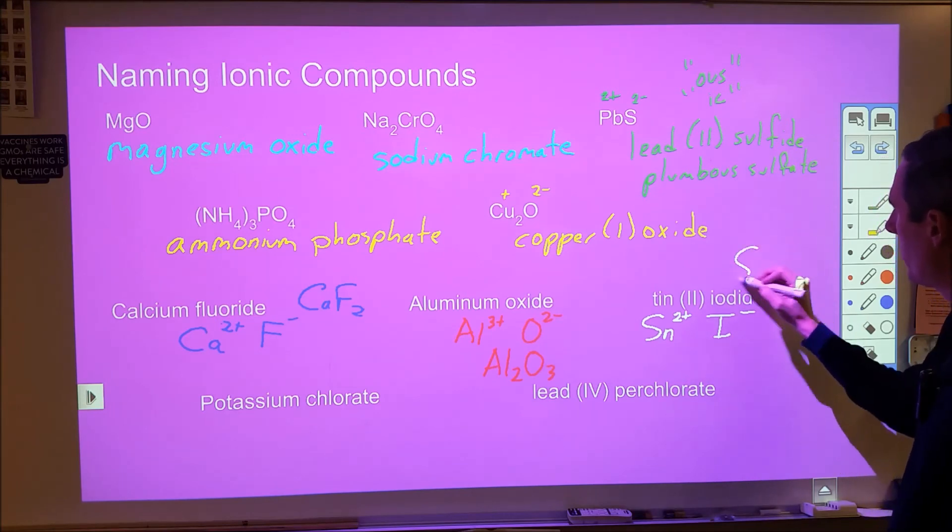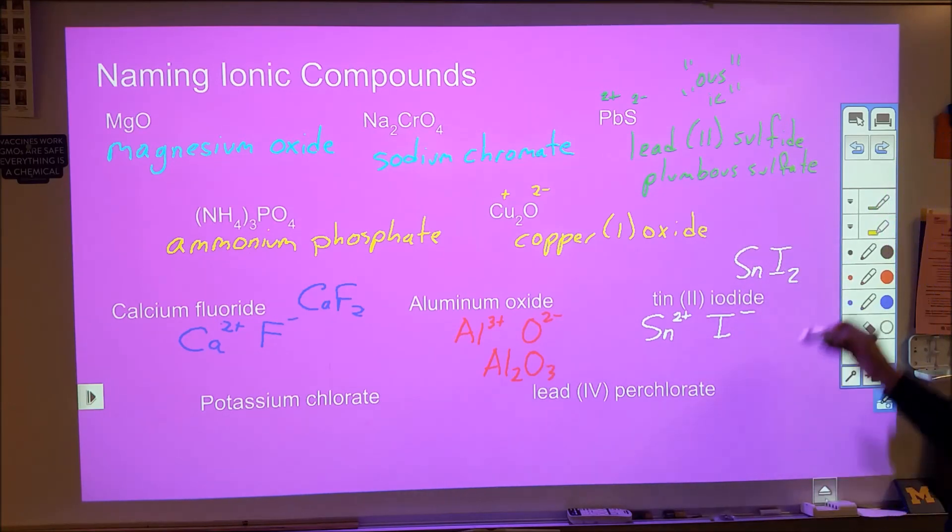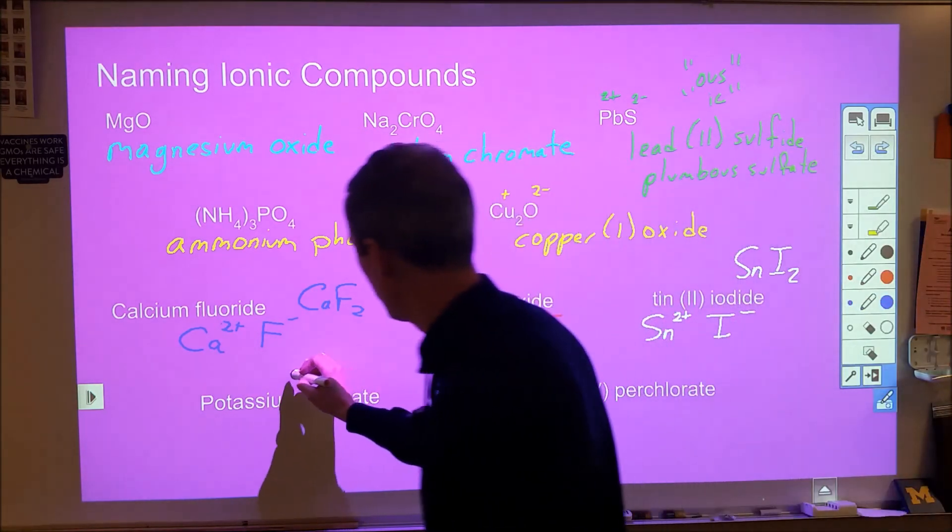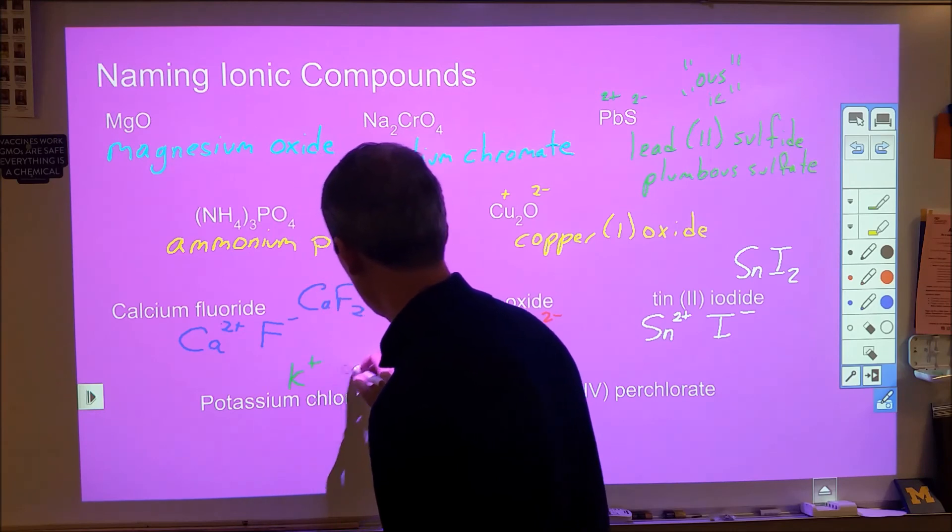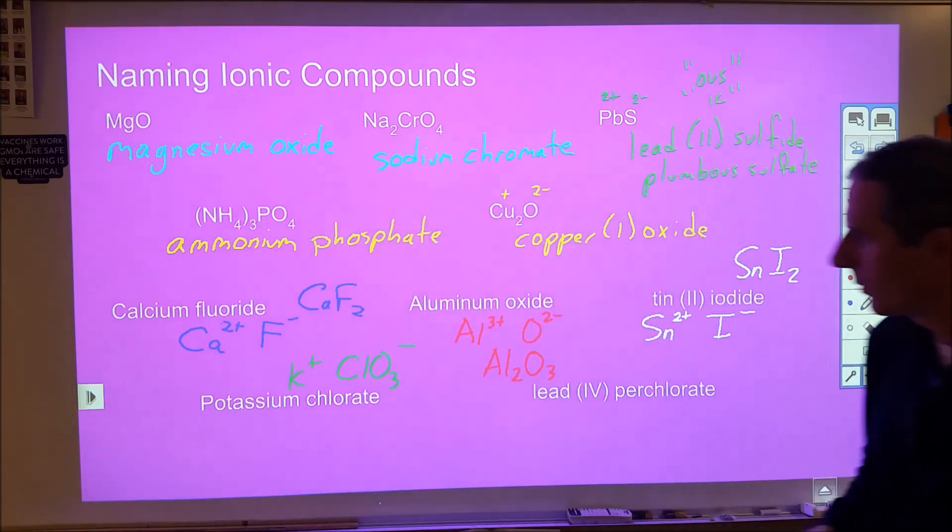So tin two iodide so tin two means tin 2+ so this would be stannis and then iodide is I- so the formula here would be SnI2.